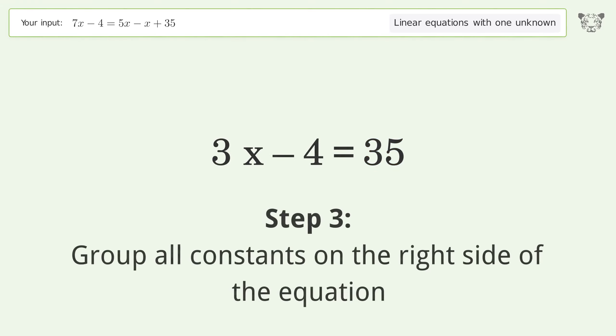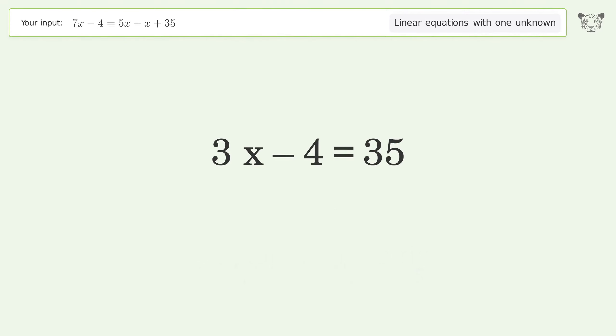Group all constants on the right side of the equation. Add 4 to both sides. Simplify the arithmetic.